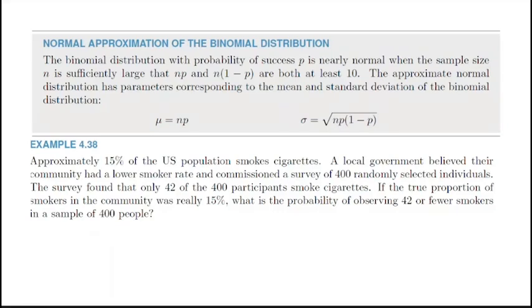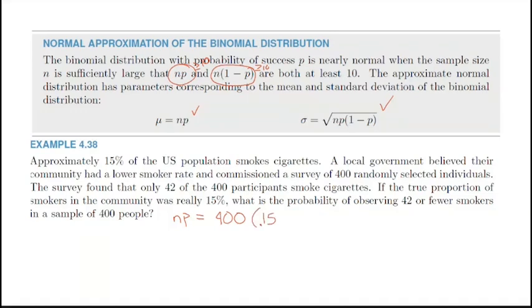A binomial distribution is nearly normal when the sample size is sufficiently large such that n×p ≥ 10 and n×(1−p) ≥ 10. If this is the case, we can use the mean and standard deviation formulas to approximate with a normal distribution. First check: NP = 400 × 0.15 = 60, which is greater than or equal to 10.